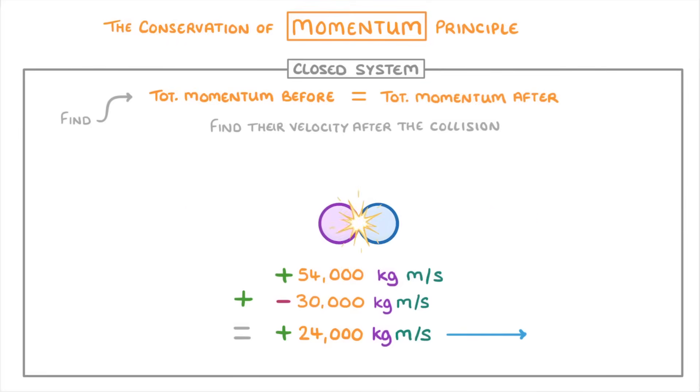So after our particles collide together, they'll both get carried to the right, because the purple one had more momentum. And because they're both moving together, we can now treat them as a single large particle.